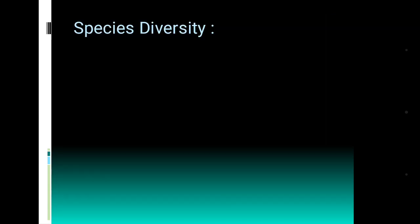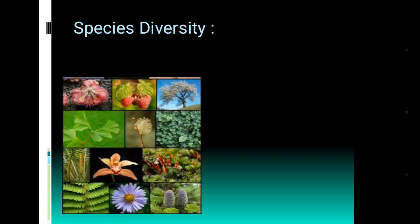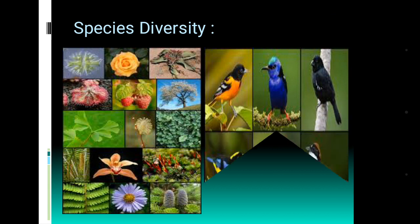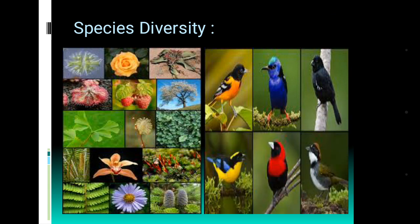Now we will know about the types of diversity. The first one is species diversity. If we look at the picture we can see the variation among the plants and also among the birds. Birds belong to the same species but are they same? No, they differ in their color, their structure, their location, their habitat.